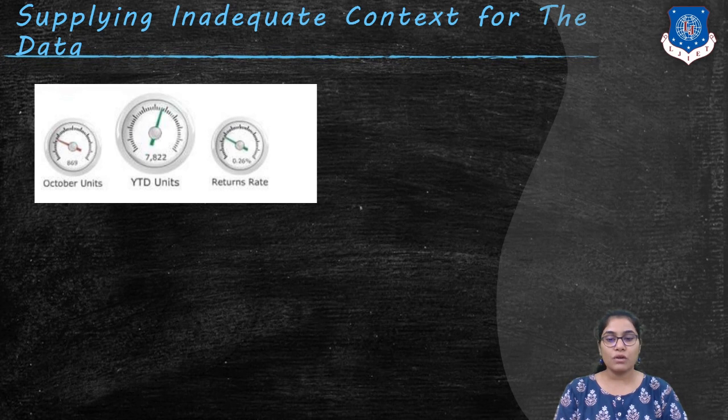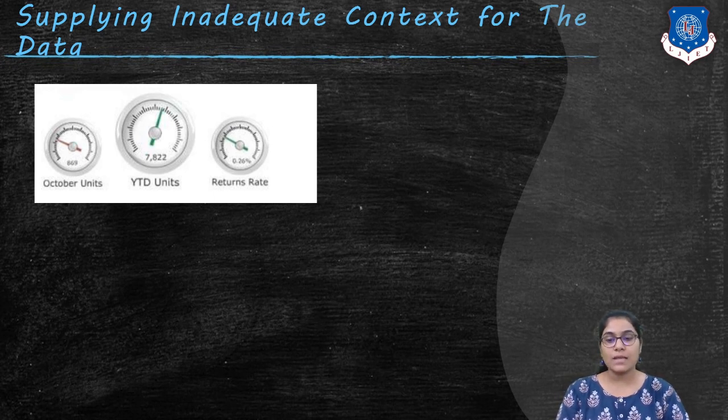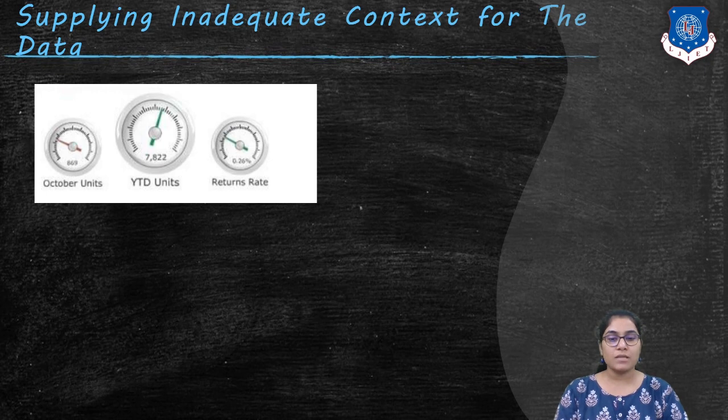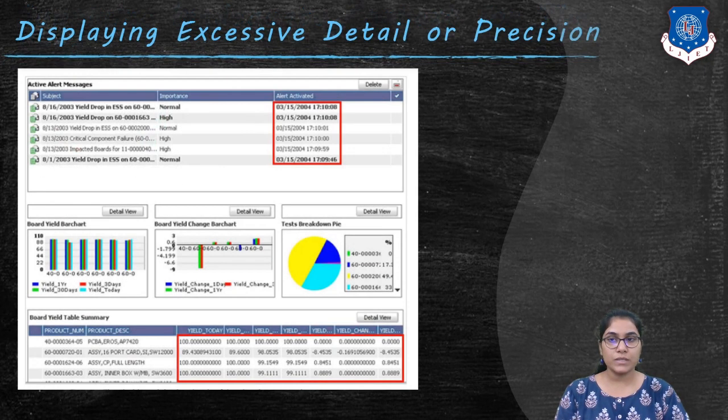Measures of what's currently going on can be enriched by providing one or more comparative measures such as a target or some history, as well as quick visual means for assessing the measure's quantitative state.